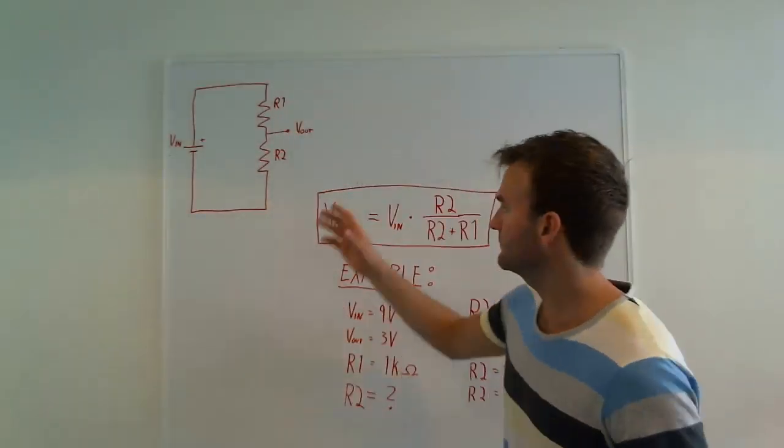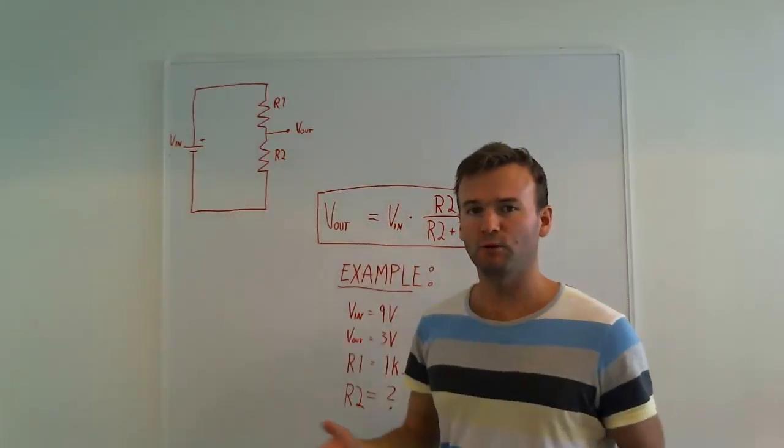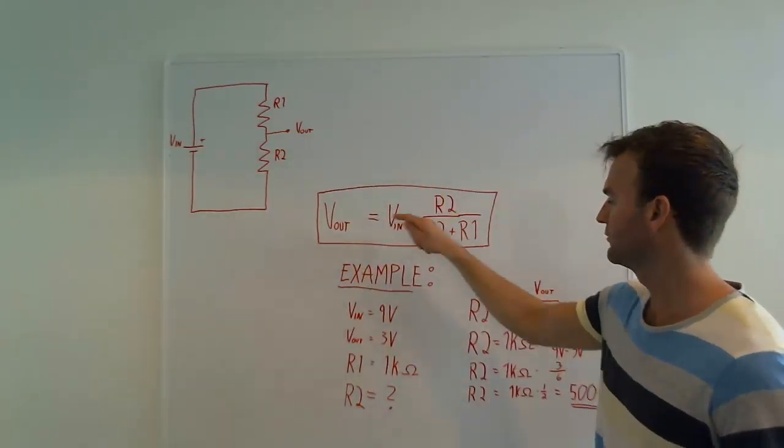Let's recap. Using these two resistors, you can easily get any voltage you want by using this formula.